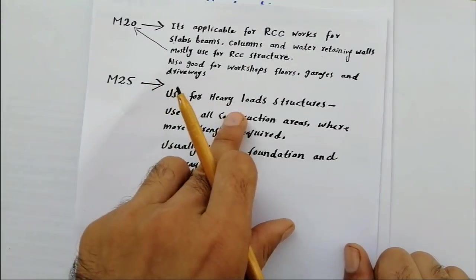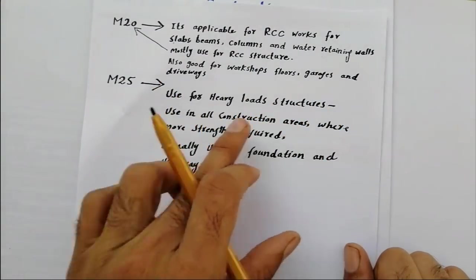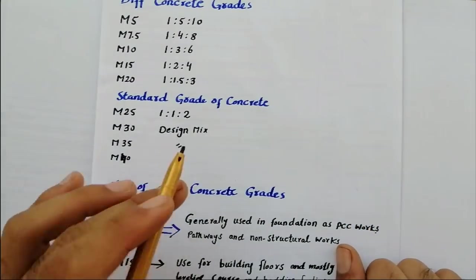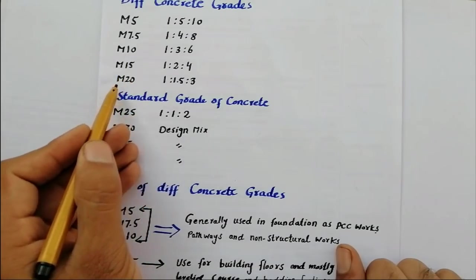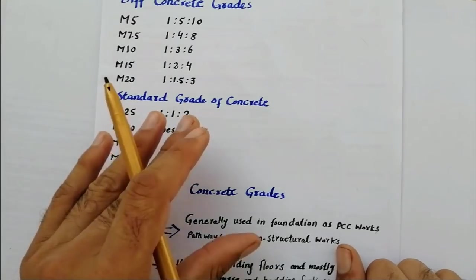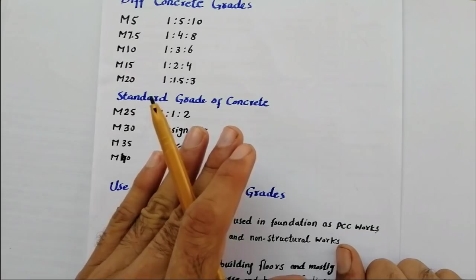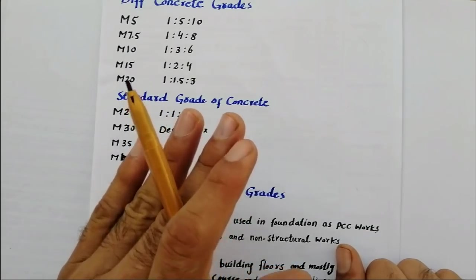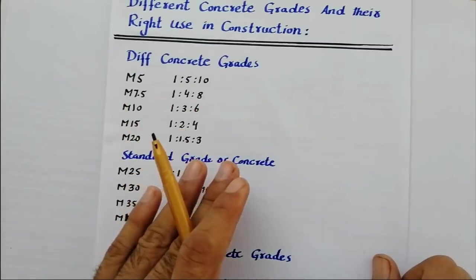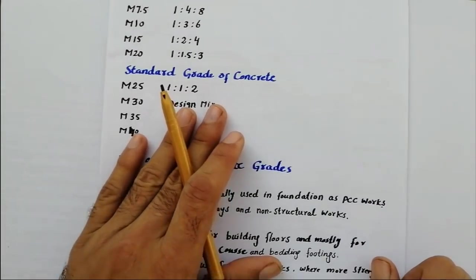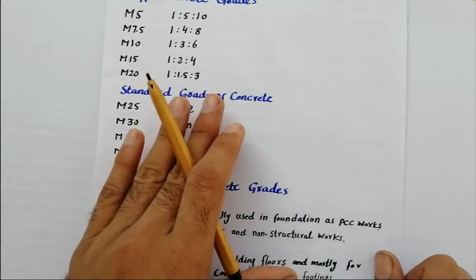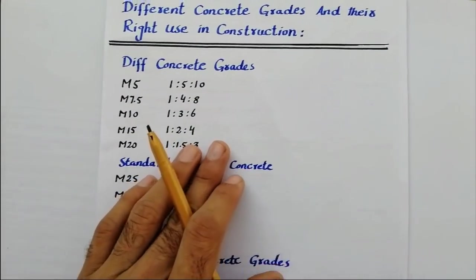You can use M20 grade concrete for heavy load structures and in all construction works. Remember, you cannot use M20 in place of M15 or M15 in place of M20 — use the suitable grade of concrete for the right construction works, and your construction will be good. If you need the article, the link is in the description, or visit my website www.civilstudents.com where you can find more articles about civil engineering. Thanks for watching, see you in the next video, goodbye.